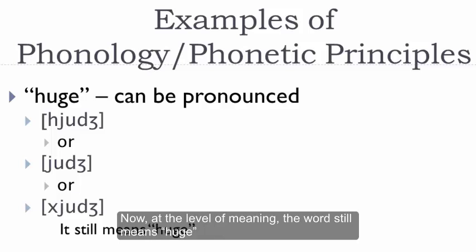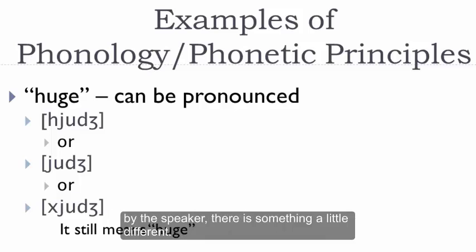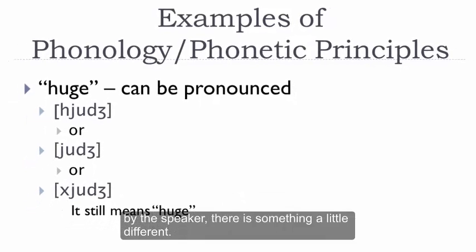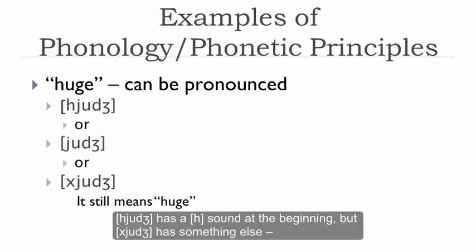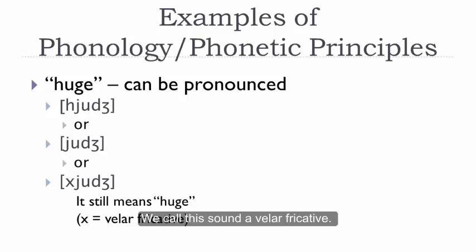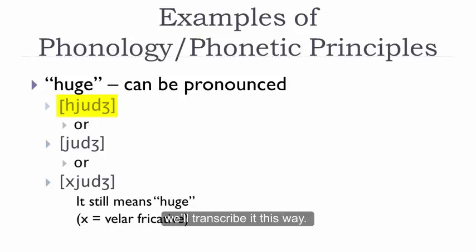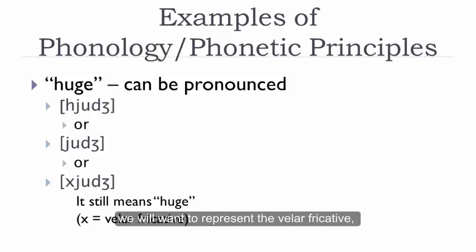Now, at the level of meaning, the word still means 'huge' — it's not a different word. But at the level of the speech sounds actually produced by the speaker, there is something a little different. The normal production has one sound at the beginning, but the emphatic production has something else: a sound produced with the back of the tongue and a more low-pitched, hissy kind of sound. We call this a velar fricative — more on that later — and we use a specific symbol to represent it.